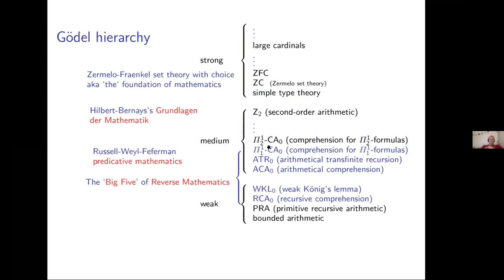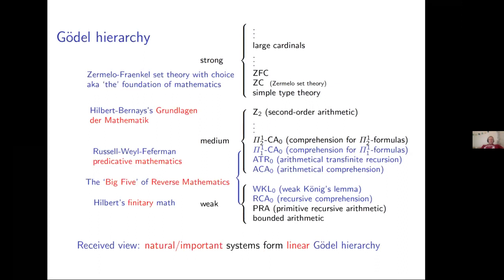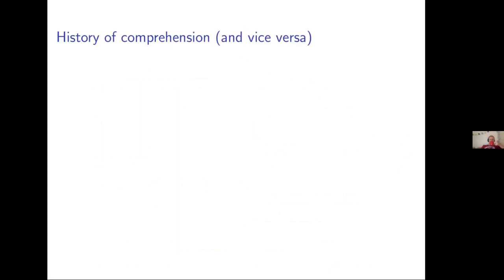There are intermediate systems of course, like WKL and ETR₀. ZFC is the foundation of mathematics; second-order arithmetic was inspired by Hilbert and Bernays' Grundlagen. ETR₀ is the limit of Feferman-Weyl-Pfeiffer predicative math. Here we have the Big Five of reverse math: RCA₀ is the base theory (you can do computable stuff), and the other four say something non-computable exists — like ACA₀ (the Turing jump exists) and Π¹₁-CA₀ (the hyperjump). Steve Simpson claims 80–90% of ordinary math is provable in these systems.